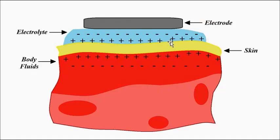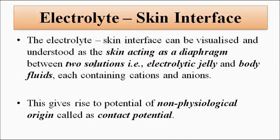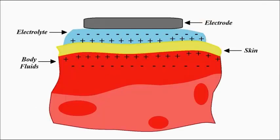We can visualize the skin as a diaphragm between the two solutions — the electrolytic jelly or electrode paste and the body fluids. Because of this arrangement, an electric potential of non-physiological nature is generated along with the biopotential, along with the physiological signal of interest. This extra non-physiological potential is mostly called the contact potential.